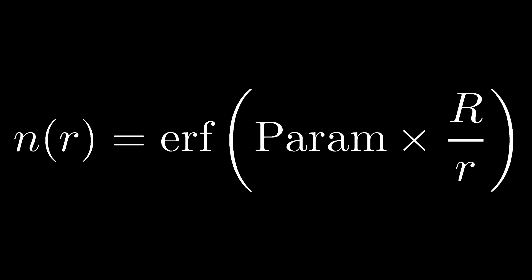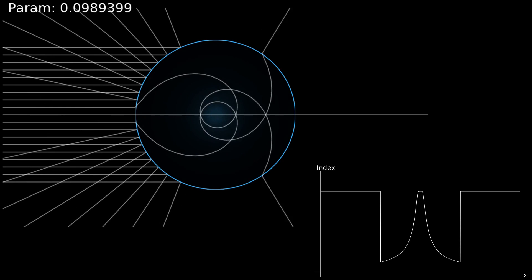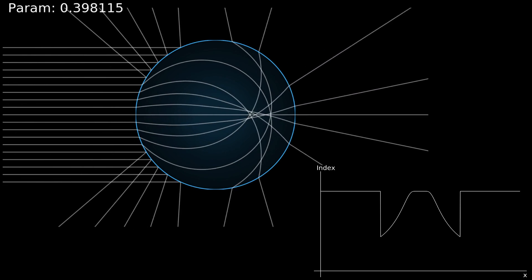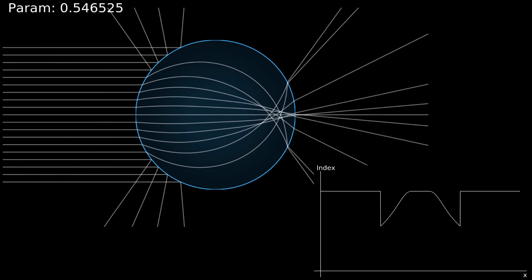Now for some fun! Let's modify our refractive index function by multiplying it by some arbitrary parameter and wrapping an error function around it. Now let's sweep through all of the values for this parameter from 0 to 2. You'll notice that initially all of the rays are reflected, but as the parameter increases, eventually more and more rays are introduced to the lens.